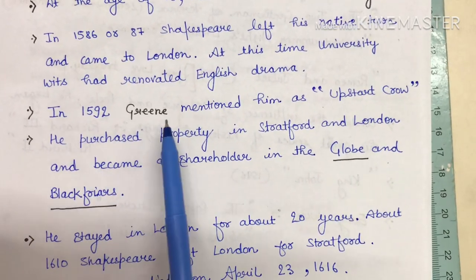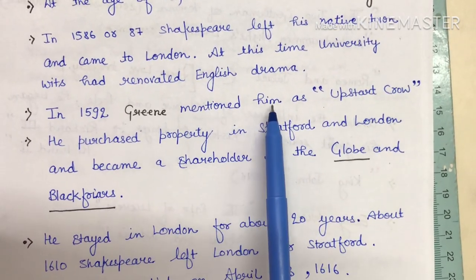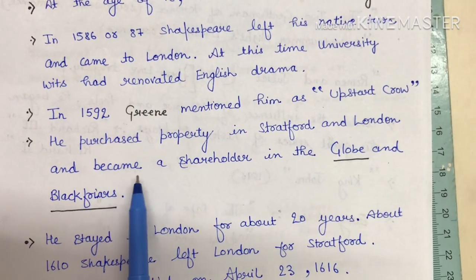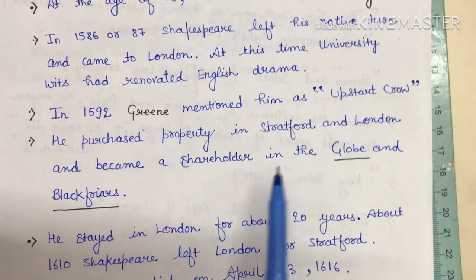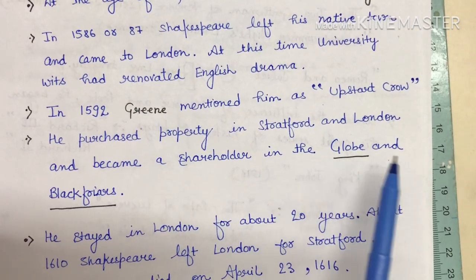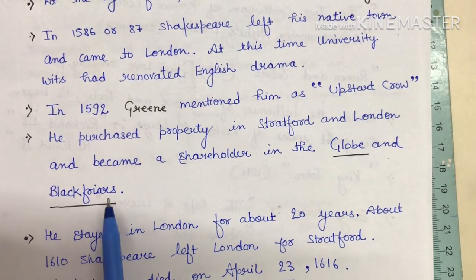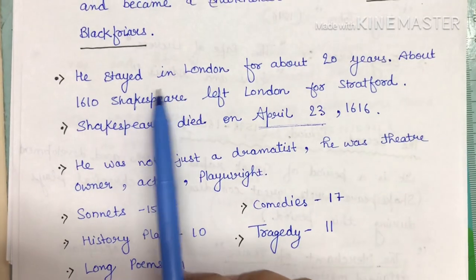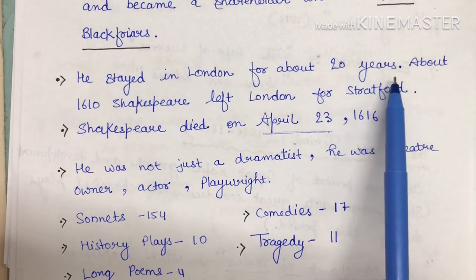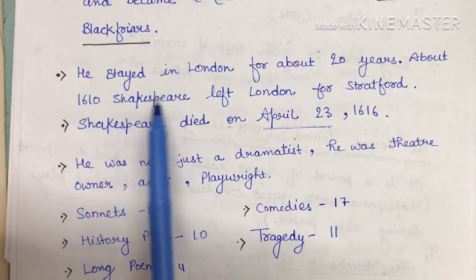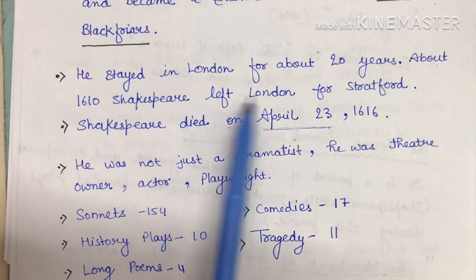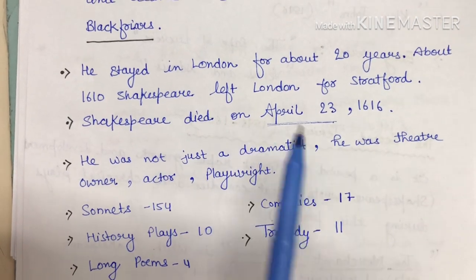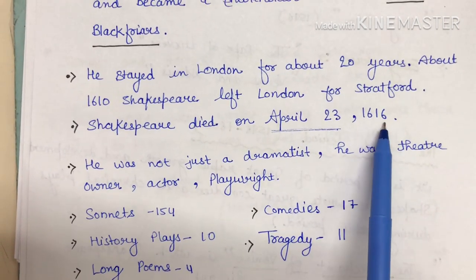In 1592, Robert Greene mentioned Shakespeare as an 'upstart crow.' Shakespeare became a shareholder in the Globe and Blackfriars theatres — this is very important from an examination point of view. Shakespeare stayed in London for around 20 years, and about 1610 he left London for Stratford.